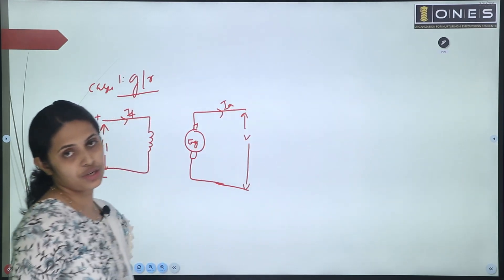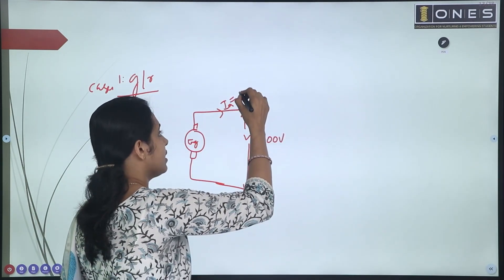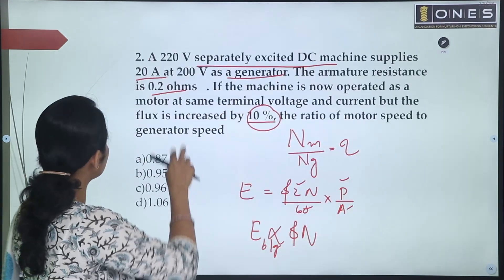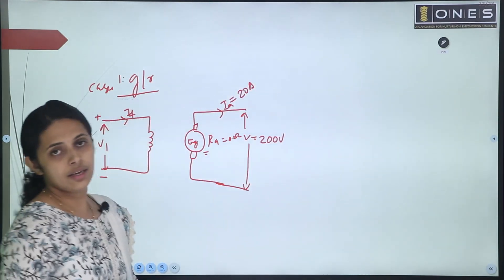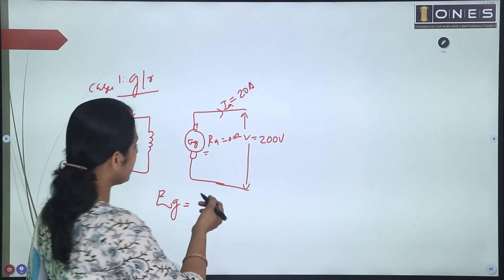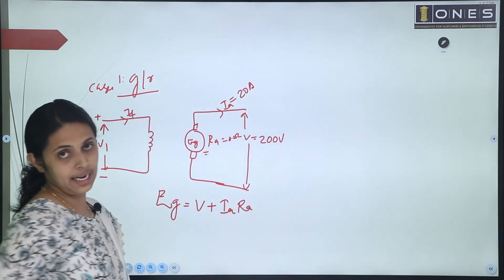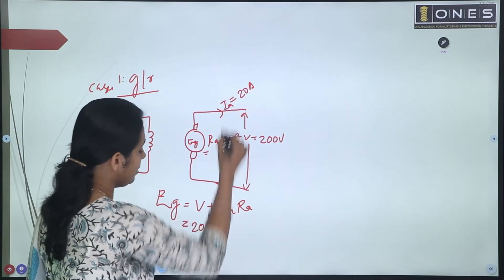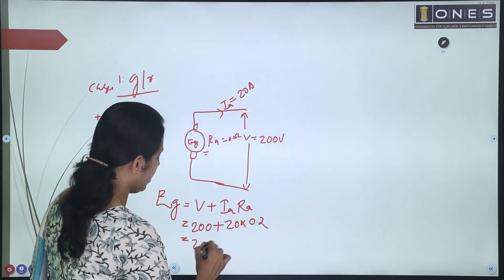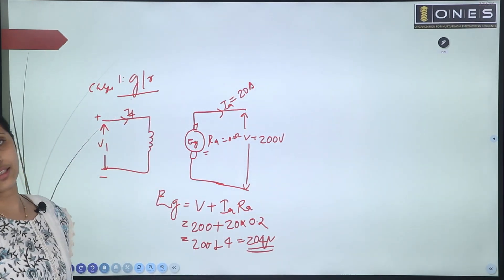The armature current is 20A and the terminal voltage is 200V. The armature resistance is 0.2 ohms. First, we calculate the generated voltage EG for the generator mode: EG = V + IA × RA = 200 + 20 × 0.2 = 200 + 4 = 204V.